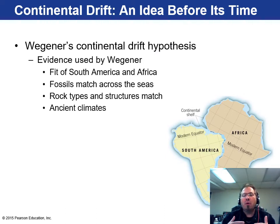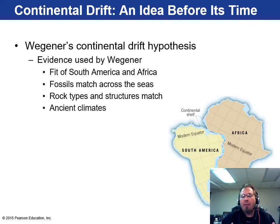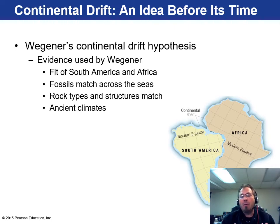What he used to show evidence for his theory was that the continents of South America and Africa fit together like jigsaw puzzle pieces. On top of that, you have fossils and rocks that match each other perfectly from one continent to another because they had to have been joined at one time. You have the same fossil on the east coast of South America as on the west coast of Africa — same rock types, same structures, and ancient climates had to have been identical.